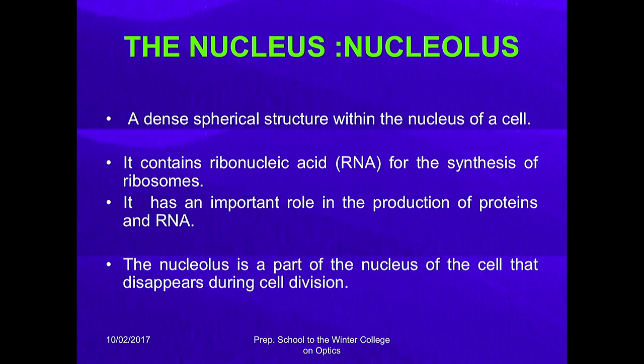The nucleolus is a dense spherical structure within the nucleus of the cell. It contains ribonucleic acid (RNA) for the synthesis of ribosomes and has an important role in the production of protein and RNA. The nucleolus is a part of the nucleus that disappears during cell division.